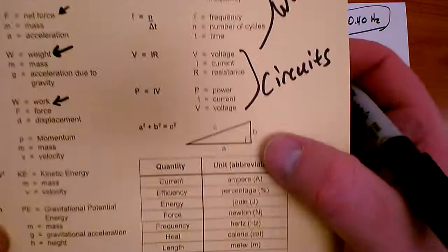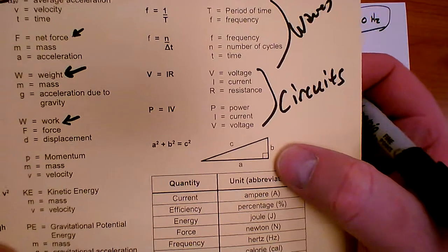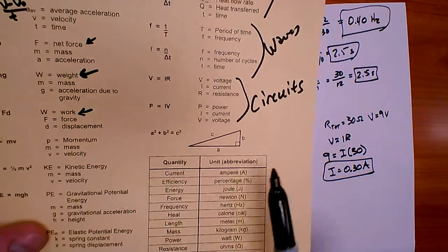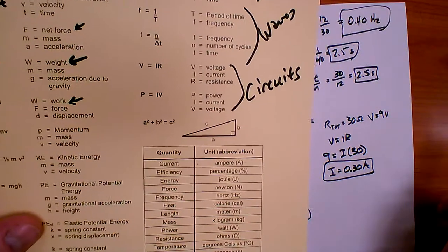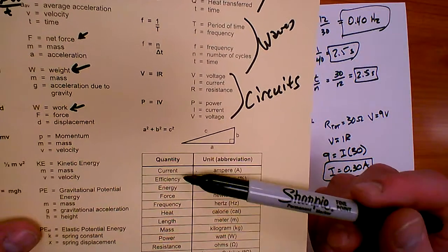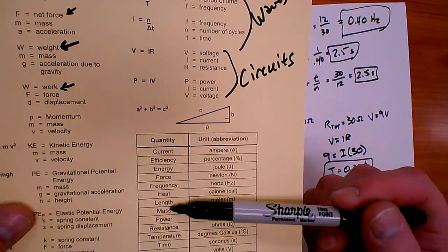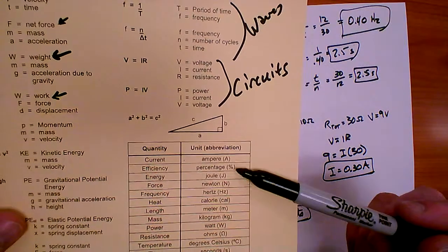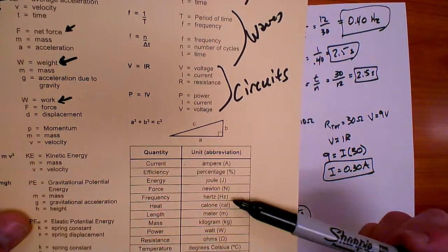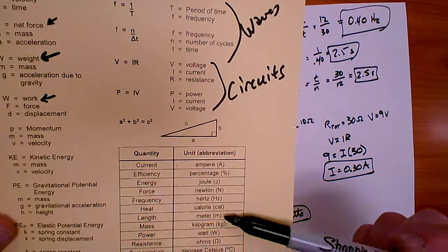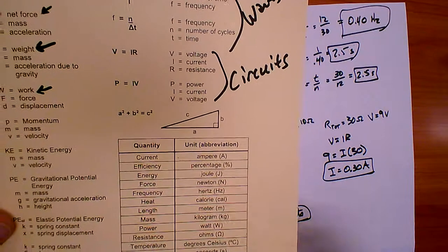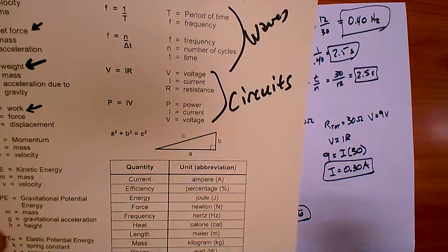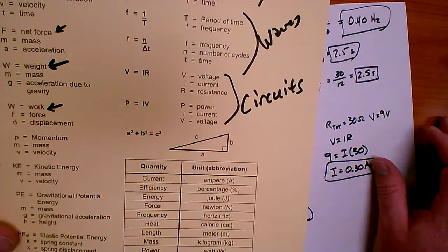The last equation is the Pythagorean theorem: A squared plus B squared equals C squared. If you have a right triangle and know two sides, plug in and solve. The equation sheet also lists units for each quantity: efficiency as percentage, energy in joules, force in Newtons, frequency in Hertz, length in meters, and heat in calories. Note that 4.184 joules equals one calorie, so the specific heat of water is 1 calorie per gram degree Celsius.